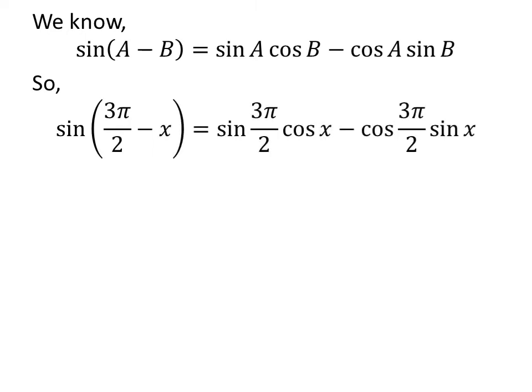Let us apply the above identity for sine of 3 times pi upon 2 minus x here. Here, a is 3 times pi upon 2 and b is x. So, sine of 3 times pi upon 2 minus x is equal to sine of 3 times pi upon 2 times cosine of x minus cosine of 3 times pi upon 2 times sine of x.